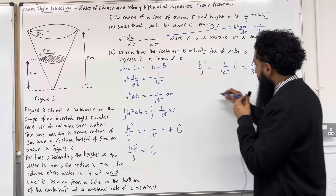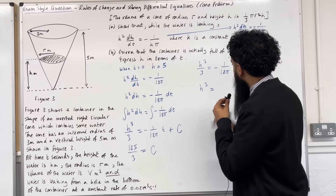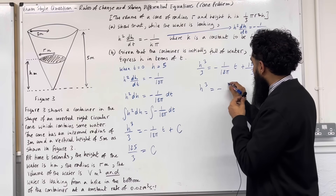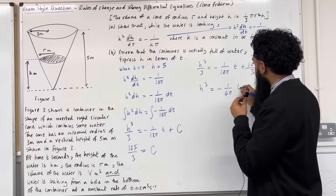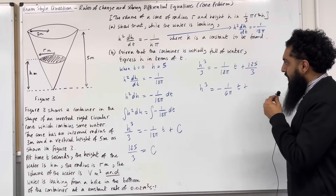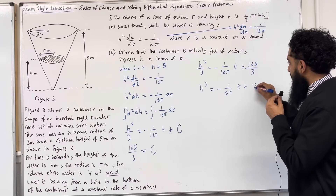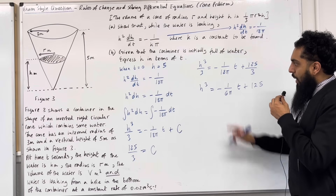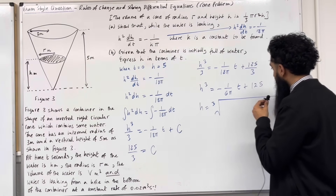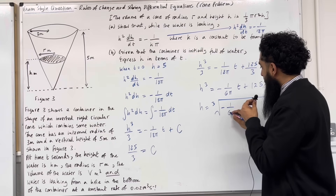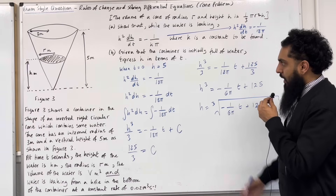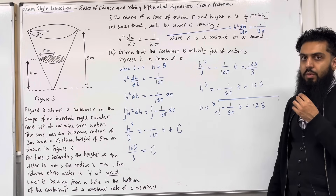Multiplying both sides by 3: h³ = −t over 6π + 125. Taking the cube root: h = the cube root of (125 − t over 6π). That completes Part B of the exam-style question.